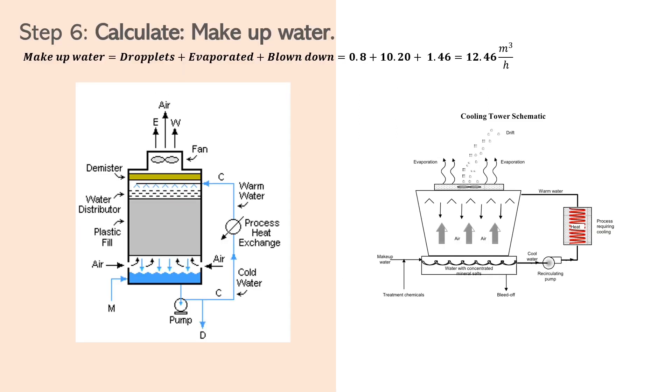The final step now is to get the makeup water. This is the water that will slowly enter our cooling tower to constantly make up for any losses that we are losing so that the water balances within our system. This will be made up of the water lost through evaporation, water lost through drifting, and water lost through blow down.